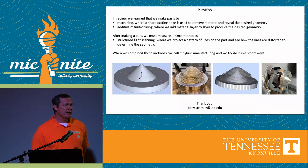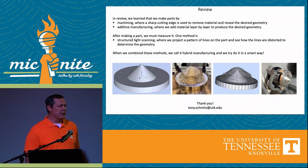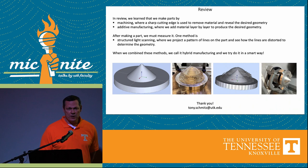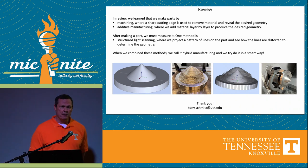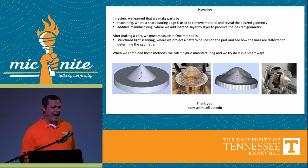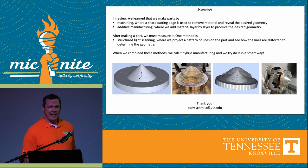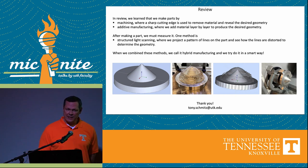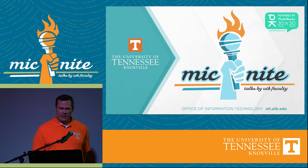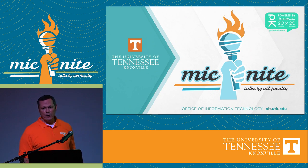To put it all together: we saw that we can make parts in different ways. We can machine parts to remove material and get geometry. We can use additive manufacturing to add material and get geometry. Regardless, we're going to need to measure what we got, so we learned about structured light scanning. When we put all those techniques together we call it hybrid manufacturing, and hopefully we've done it in a smart way when we're all done.